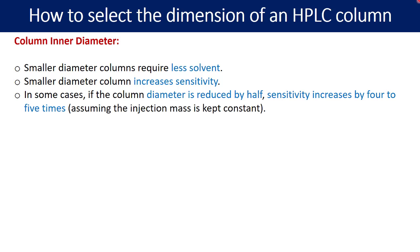In some cases, if the column diameter is reduced by half, sensitivity increases by 4 to 5 times, but only assuming the injection mass is kept constant. There is a great increment into the sensitivity observed while reducing the inner diameter of the column.